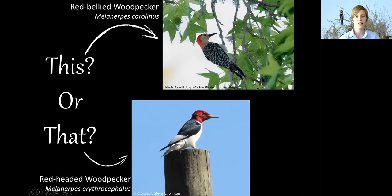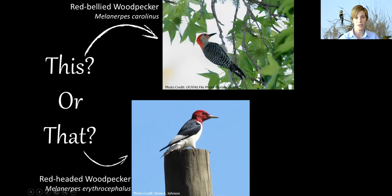Another difference is the wings. On the red-bellied woodpecker, some people call it a salt-and-pepper look — a very even mix of black and white. Compared to the red-headed woodpecker, which has very solid black wings with just one patch of white. Also, the red-bellied woodpecker has a darker bill compared to the lighter bill of the red-headed woodpecker. In general, the red-bellied woodpecker is much more common and adaptable to urban areas, whereas the red-headed woodpecker is often only found in natural areas — so it's a special treat to see one.